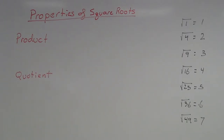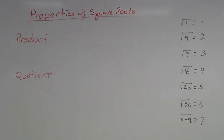What I'm going to talk about today is the product property and the quotient property. These two properties we use to simplify square roots when we can't take the square root of a number. I'm going to show this just with number examples — I'm going to skip the variables on this one and just do examples with numbers.